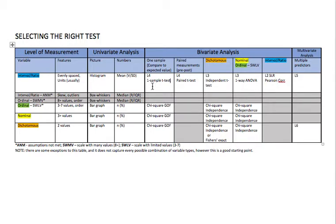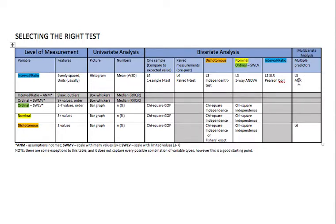That gets us through lessons two, three, and four. For lesson five, we take simple linear regression and turn it into a multivariate analysis. Instead of looking at only two variables at a time, with multivariate or multivariable analysis we can have multiple predictors — dichotomous, nominal, and interval ratio — all predicting a continuous outcome. Instead of calling it simple linear regression, we call it multiple linear regression, abbreviated MLR. This is where we get into confounders, effect modifiers, and model building — really where a lot of research happens, adjusting for multiple different things in our model.